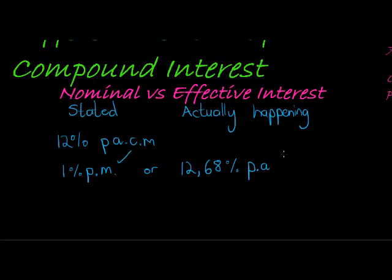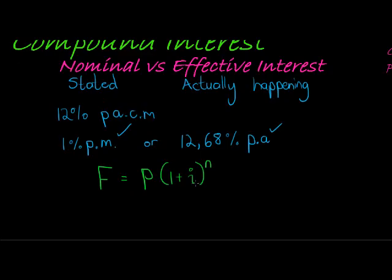This is what actually is happening. The reason I'm stressing that is because when we look at our formula, the future value is the present value multiplied by the interest over a certain number of times. What is very important is that we always use the actual interest, the effective interest.